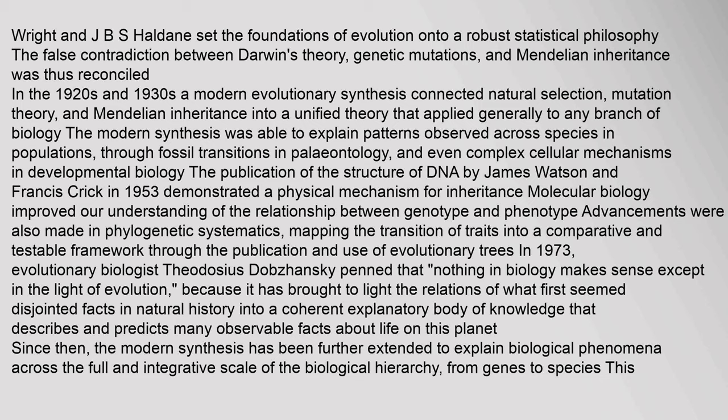The false contradiction between Darwin's theory, genetic mutations, and Mendelian inheritance was reconciled in the 1920s and 1930s. A modern evolutionary synthesis connected natural selection, mutation theory, and Mendelian inheritance into a unified theory applicable generally to any branch of biology. The modern synthesis was able to explain patterns observed across species in populations, through fossil transitions in paleontology, and even complex cellular mechanisms in developmental biology.